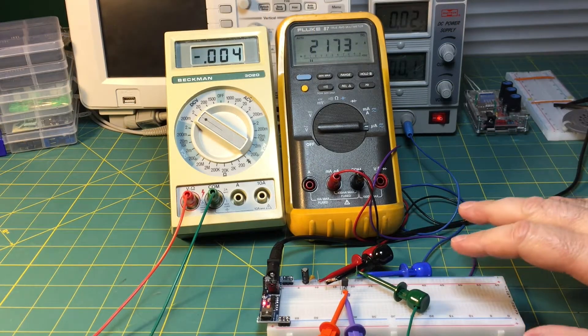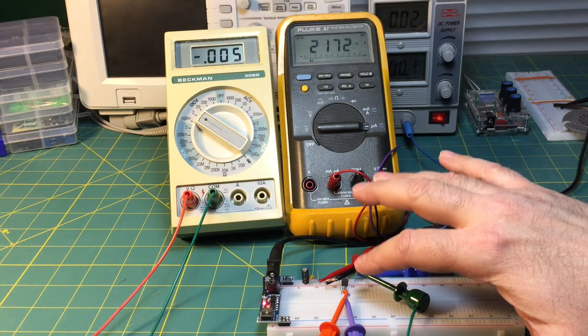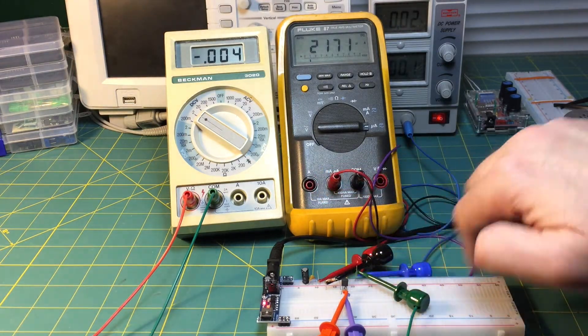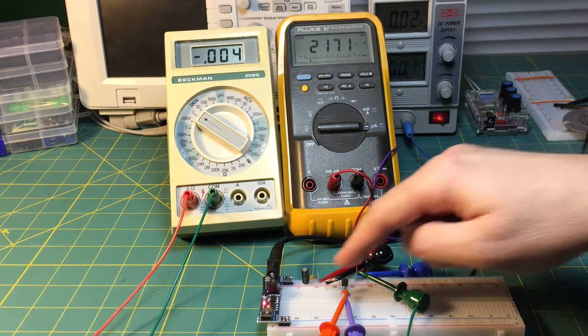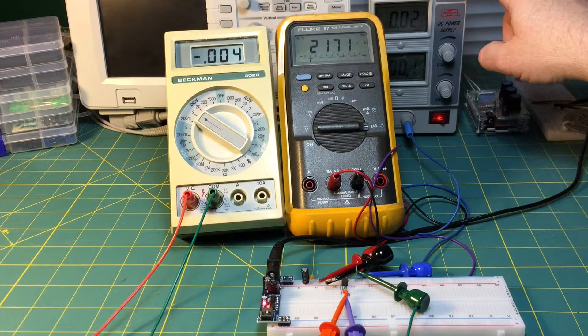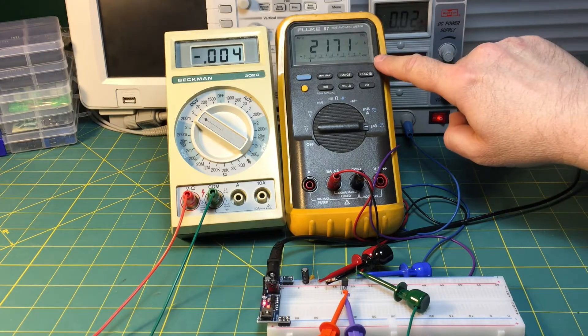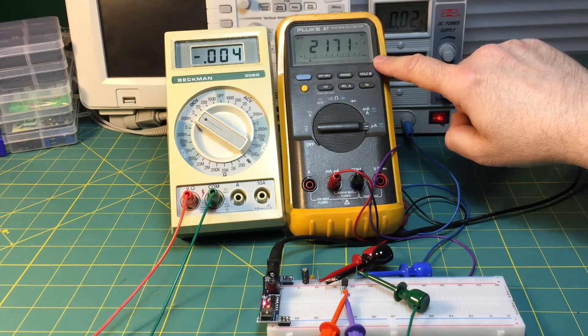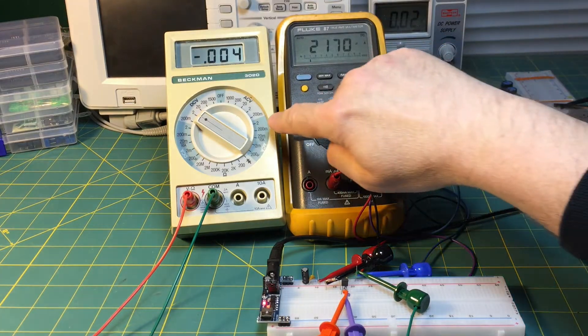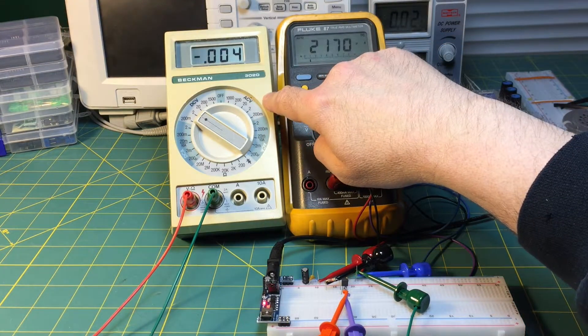Okay I built our test circuit which is the Fairchild J201 and the 1k resistor on a wireless breadboard. This is a five volt supply. Back here is the variable supply I want to use for the gate and this meter is drain current. Right now it's about 2171 microamps and this is gate voltage which is about minus four millivolts.